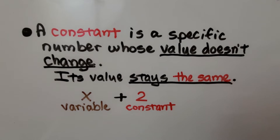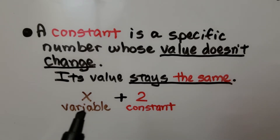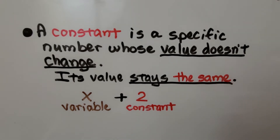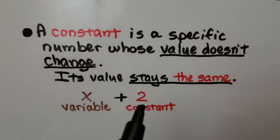A constant is a specific number whose value doesn't change — its value stays the same, it stays constant. So here we have a variable plus a constant: x plus 2. The value of the variable may change, but that 2 is always going to be constantly a 2.